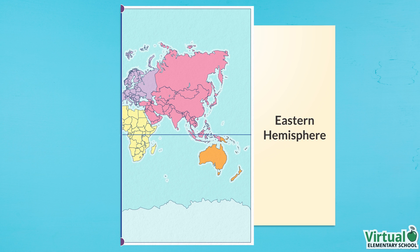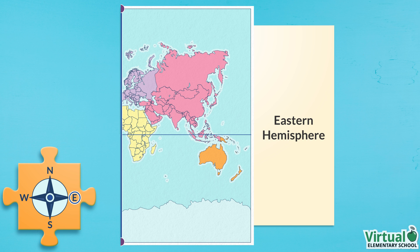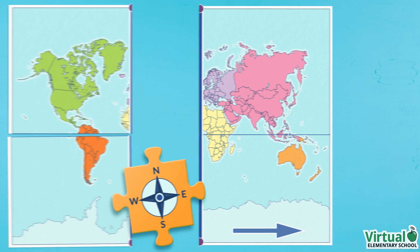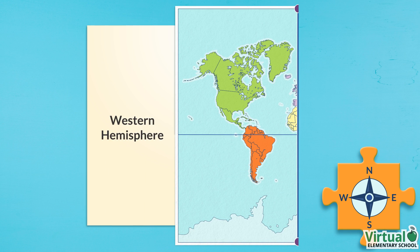The area to the east of the prime meridian is called the eastern hemisphere. On the compass rose, we see that E is circled to show that this part is east of the prime meridian. The area to the west of the prime meridian is called the western hemisphere. On the compass rose, we see that W is circled to show that this part is west of the prime meridian.